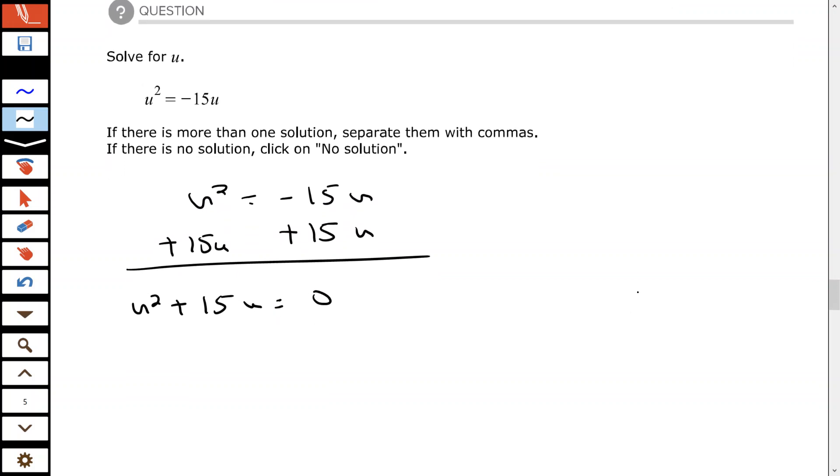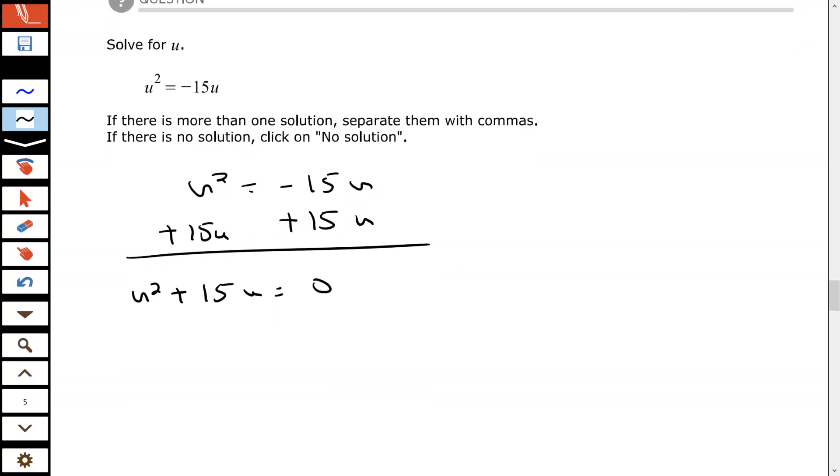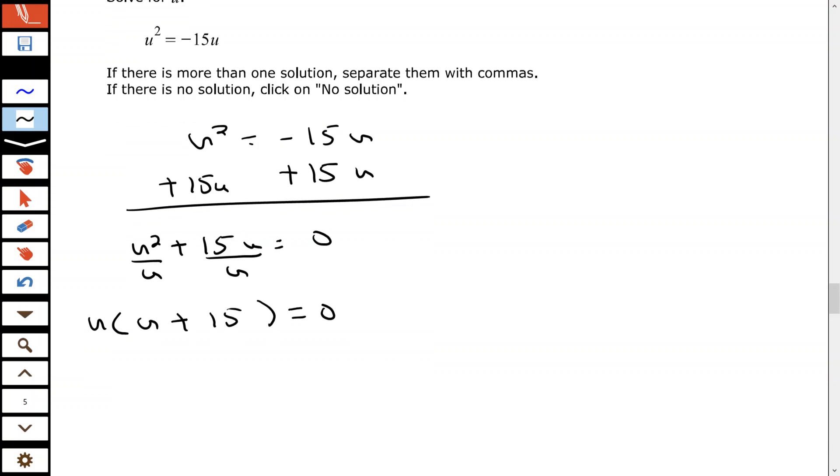All right, and then the next step we want to factor. So here u squared plus 15u, I have a common factor of u, so I'm going to factor out the greatest common factor of u. And that leaves me with u plus 15 in the parentheses. And then set each factor equal to zero.